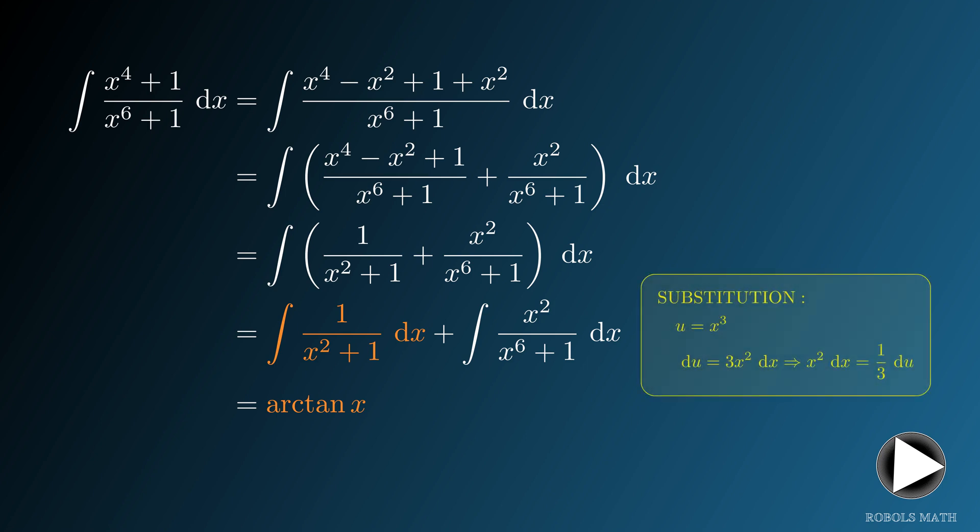The antiderivative of the second one can be obtained by letting u be x cubed. The derivative of x cubed is 3x squared, so the integral becomes one-third of 1 over u squared plus 1 du. The antiderivative of this is one-third of arctan u. Replace u with x cubed.